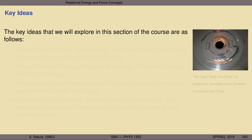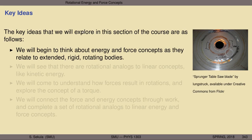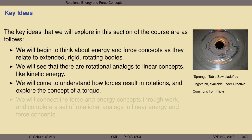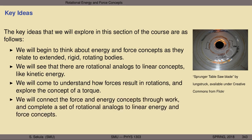The key ideas we will explore in this section are as follows. We will think about energy and force concepts as they relate to extended rigid rotating bodies — bodies like this saw blade, where if you rotate the object through some angle like one degree, all the points on this rigid body rotate through one degree. We'll find rotational analogs to linear concepts like kinetic energy, explore the concept of torque, and connect force and energy concepts through work, completing a set of rotational analogs to linear energy and force concepts.